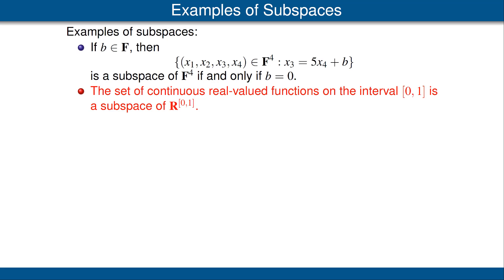For our next example, let's consider the set of all continuous real-valued functions defined on the closed interval from 0 to 1. This is a subset of the vector space of all functions from the closed interval to the real line. It is a subspace because the zero function is continuous — that's our first condition. We also have that the sum of two continuous real-valued functions is continuous — that's the second condition. And a constant times a continuous real-valued function is continuous — that's the third condition for being a subspace.